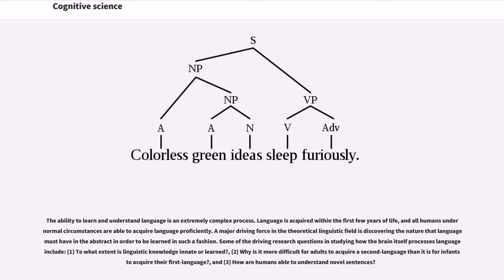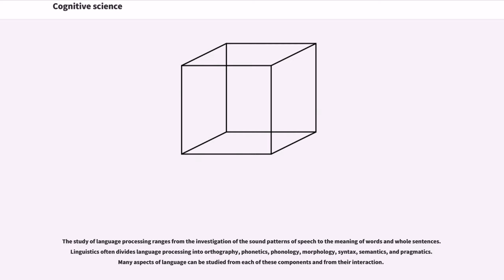The ability to learn and understand language is an extremely complex process. Language is acquired within the first few years of life, and all humans under normal circumstances are able to acquire language proficiently. A major driving force in the theoretical linguistic field is discovering the nature that language must have in the abstract in order to be learned in such a fashion. Some of the driving research questions in studying how the brain itself processes language include: 1, to what extent is linguistic knowledge innate or learned? 2, why is it more difficult for adults to acquire a second language than it is for infants to acquire their first language? And, 3, how are humans able to understand novel sentences?